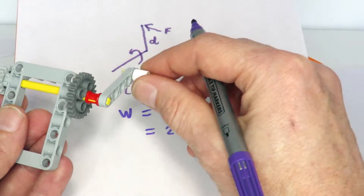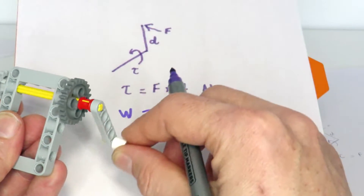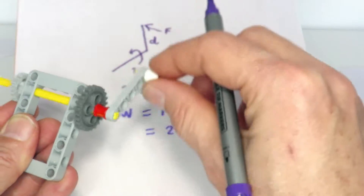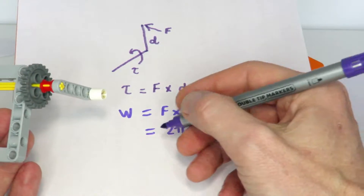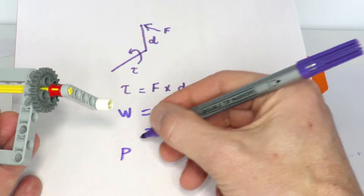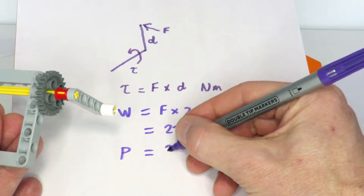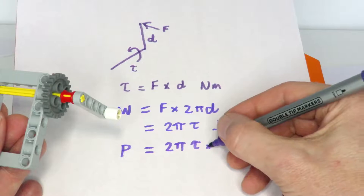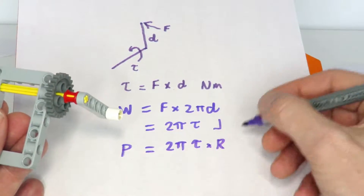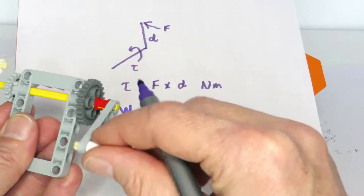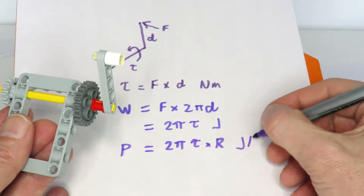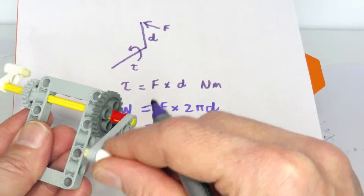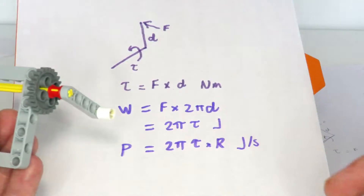From that we can calculate power, which is the energy per second. If we calculate the number of revolutions per second r, then the power is 2π times the torque times r, giving us joules per second — the overall power being expended per second when rotating the handle against that torque.